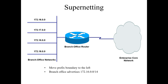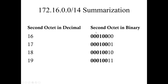Super netting — we move our prefix boundary to the left, not to the right. Subnetting moves toward the right. Here we have a /14, meaning we're now working in the second octet. Let's look at our second octet: 16, 17, 18, and 19. We could summarize all four of these by looking at what they all have in common.